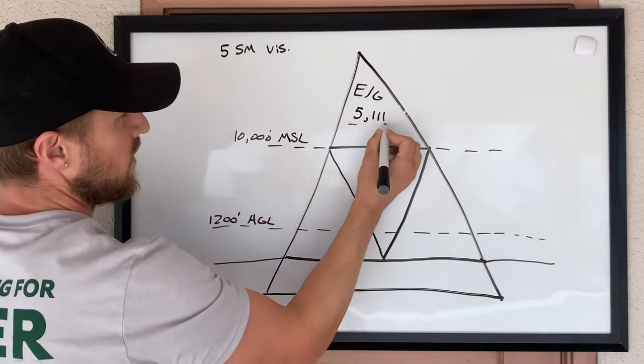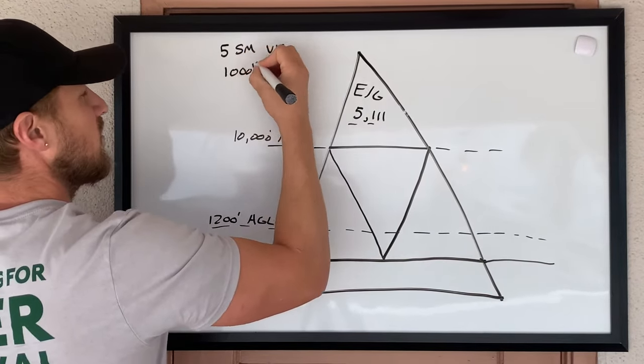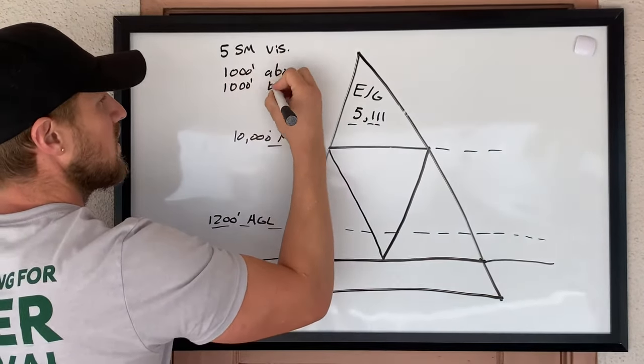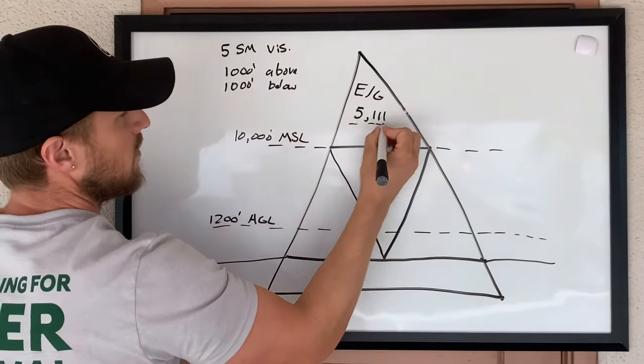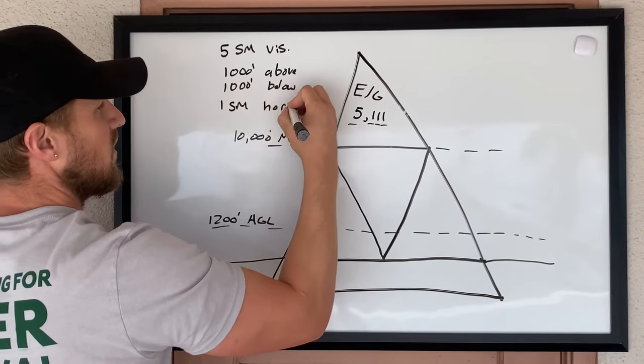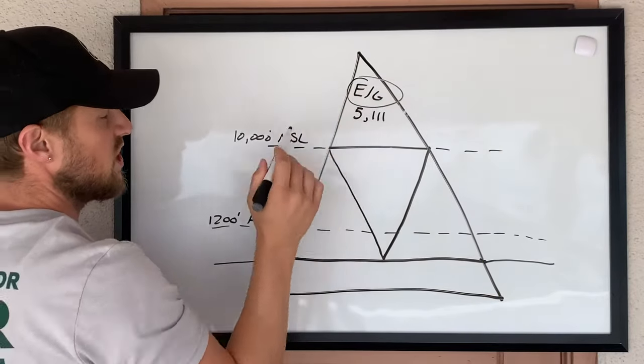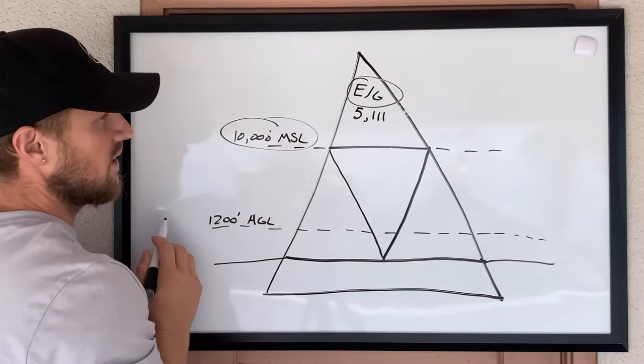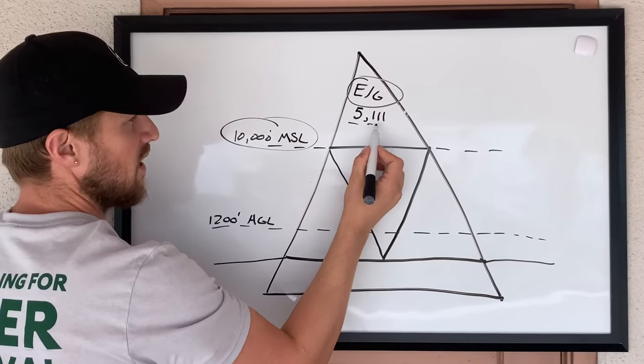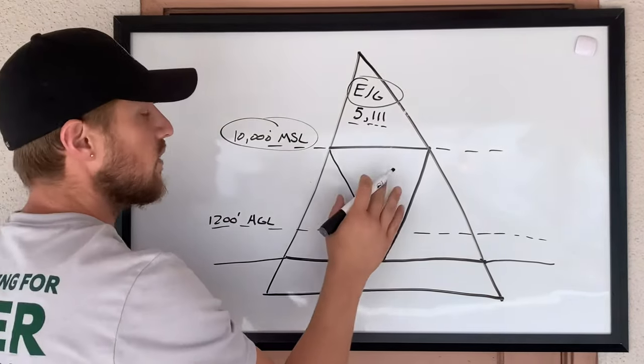The second three-digit number is going to start with the first digit being feet above clouds, so that's a thousand feet above. The second one is going to be below, so it's a thousand feet below. And the third number is going to be horizontal distance, that's going to be one statute mile horizontal. So when you're in Class E or G above 10,000 feet MSL, your VFR weather minimums are five statute miles, a thousand feet above clouds, thousand feet below clouds, one statute mile horizontal distance from clouds.